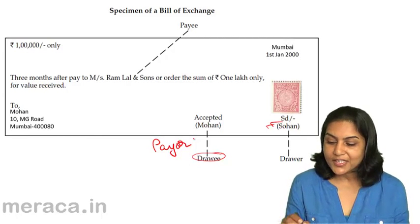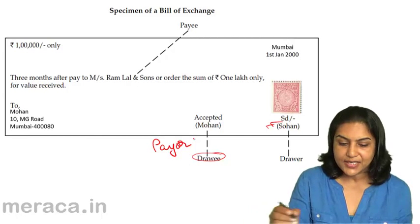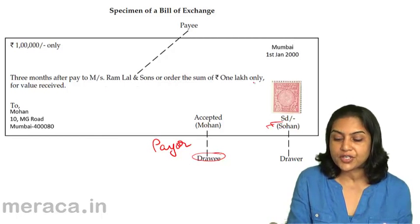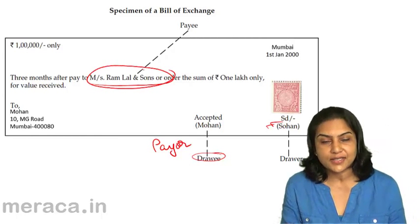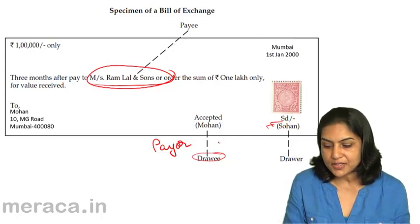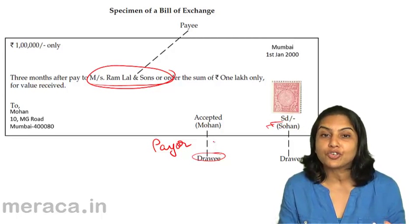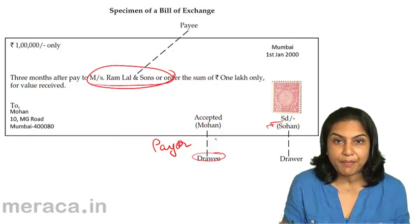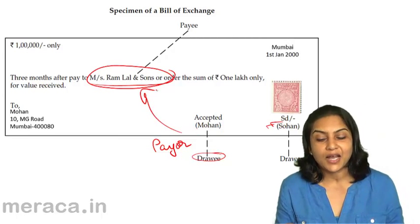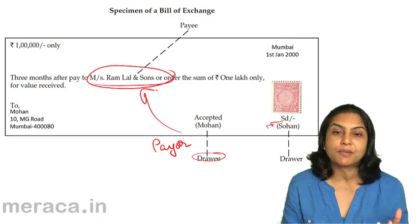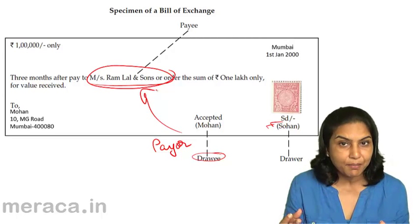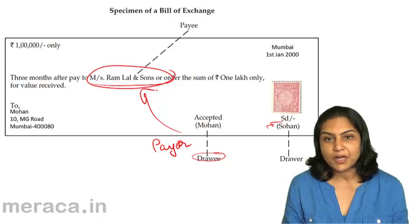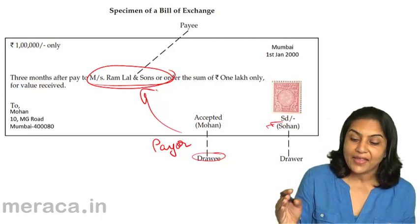What is different in this specimen is what does the bill say? The bill is dated, it's an amount of rupees 1 lakh. It says 'three months after, pay Mrs. Ramlal and Sons or order the sum of rupees 1 lakh.' So the payment is being made to Ramlal and Sons — Ramlal and Sons is the payee. Now we have three parties: one is Sohan, the maker/drawer of the bill; it was accepted and drawn on Mohan, who will make the payment to Ramlal and Sons; so Ramlal and Sons is the payee — the person who will receive the money — and Mohan is the payer. This is an instance of a bill of exchange where the drawer is different, the drawee is different, and the payee is different.